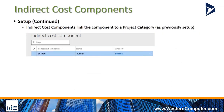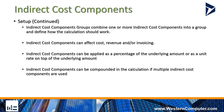Next, you link this project category to an indirect cost component — a one-to-one link between your category and your component so the system knows where to record transactions. You then have indirect cost component groups, which combine one or more components into a group. The indirect cost components can affect three areas: cost, revenue, and invoice. They can be applied as a percentage of the underlying amount or as a unit rate, and costs can be compounded one on top of another when multiple components are used.